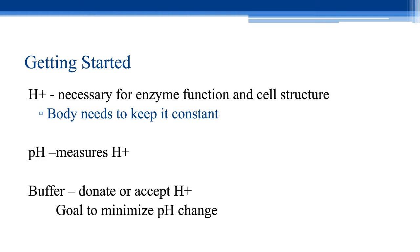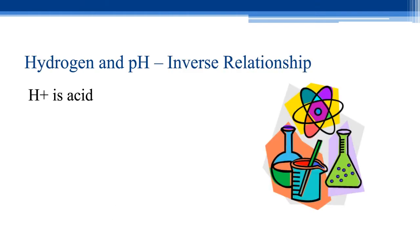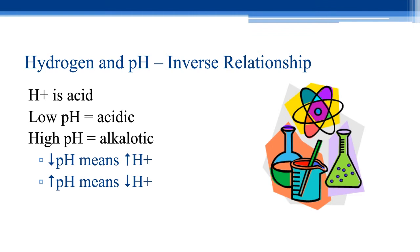There are inverse relationships with acid base, and that's part of what makes it so confusing. Hydrogen and pH are the big ones that have this inverse relationship. Hydrogen is an acid. A low pH means a very acidic environment, and a high pH means very alkalotic or basic environment. Here's where things start to get confusing: the lower the pH, the more acidic, which means there's more hydrogen. So low acidic pH means lots of hydrogen; high or basic pH means not enough hydrogen. That's our first inverse relationship.